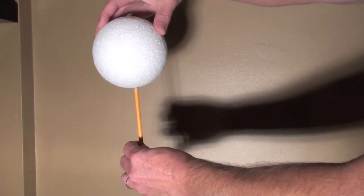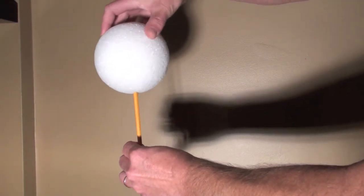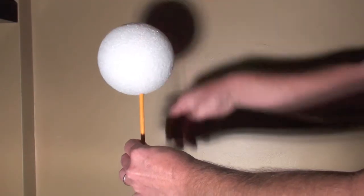Simply stick the foam ball onto the end of the pencil. The foam ball will be the moon and the lamp is the sun.